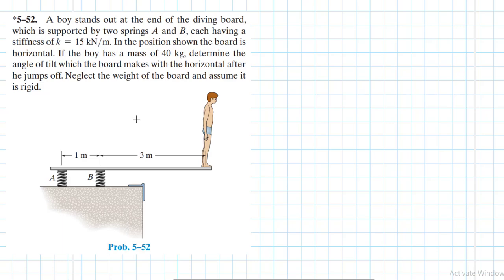The problem reads: a boy stands at the end of a diving board which is supported by two springs A and B, each having a stiffness of k equal to 15 kN per meter. In the position shown, the board is horizontal. If the boy has a mass of 40 kg, determine the angle of tilt which the board makes with the horizontal after he jumps off. Neglect the weight of the board and assume it is rigid.